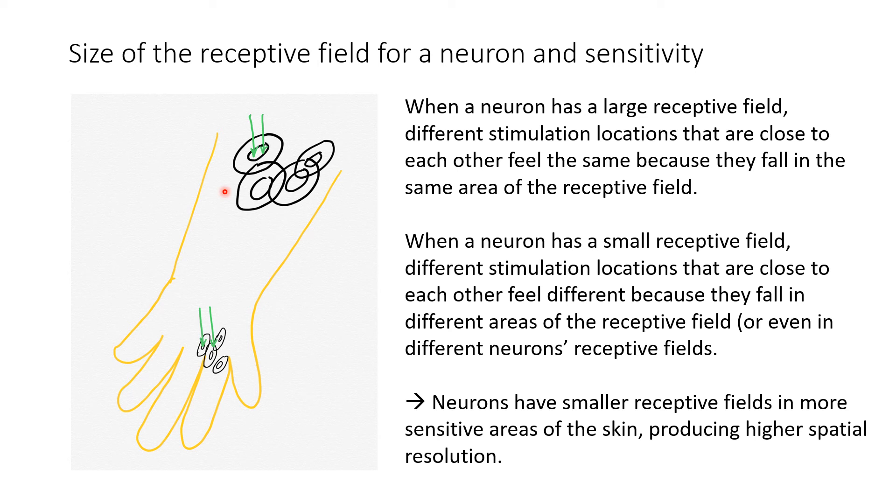In the graph, we see both stimuli hitting the center of the same receptive field. In other words, sensitivity with stimulus location on the arm is not very high. We don't have a very precise sense of where on the arm is the stimulus.